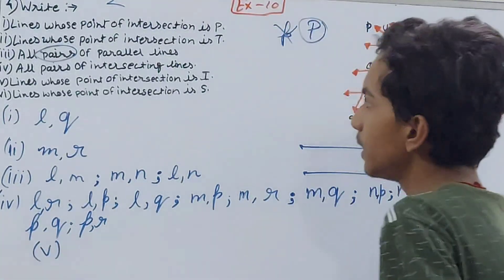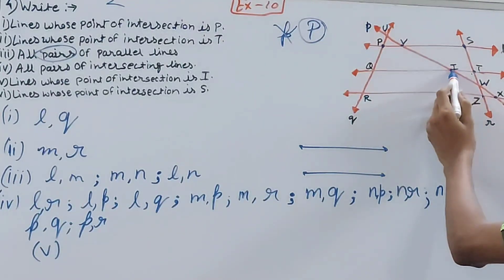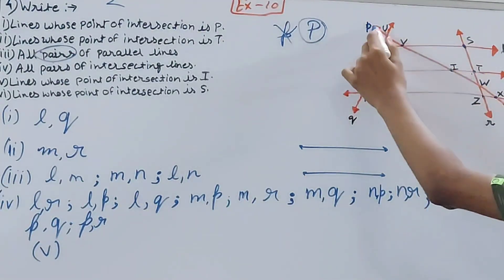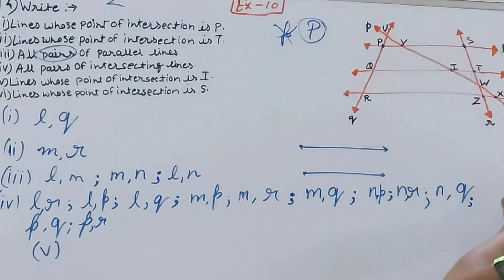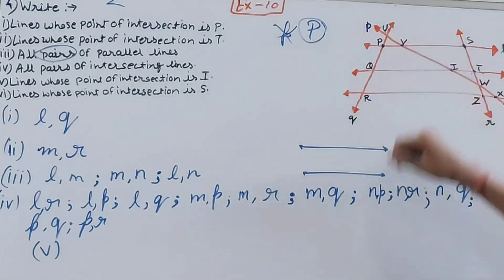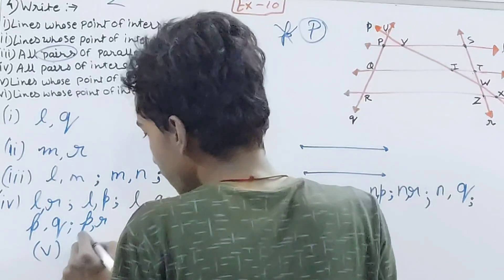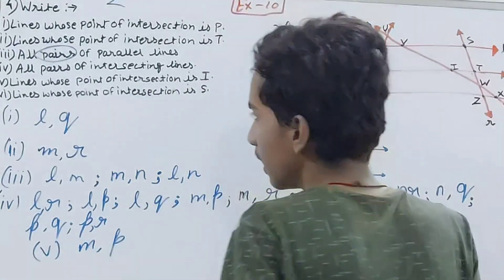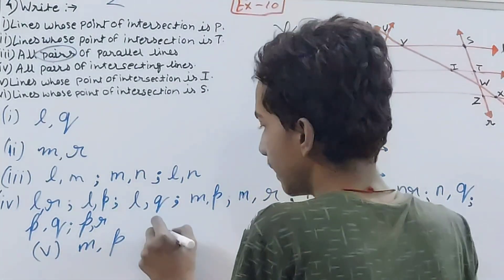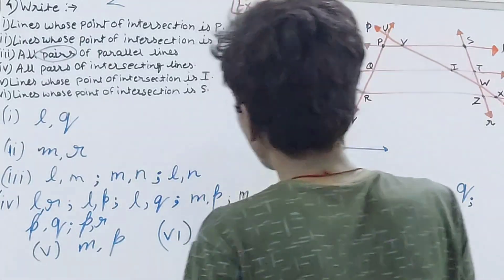For part five, lines whose point of intersection is I: at point I we can see lines p and m intersecting. So the answer is p and m.